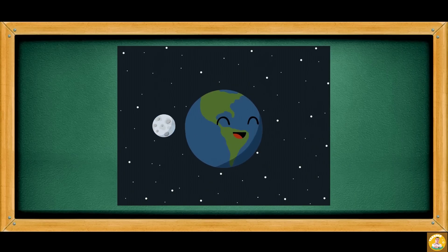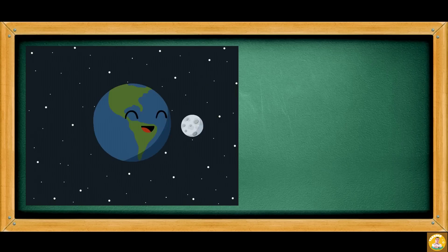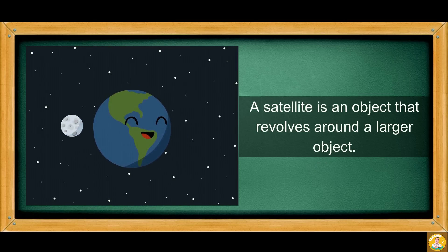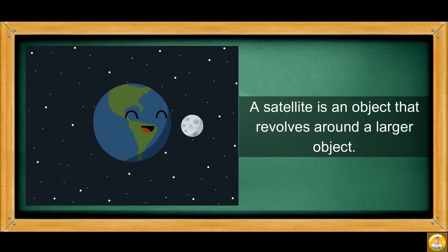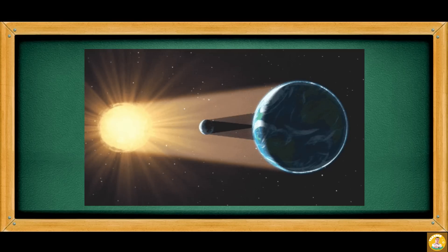The moon is the only natural satellite of the Earth. A satellite is an object that revolves around a larger object. The moon does not produce its own light — it only reflects the light coming from the sun.